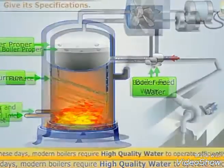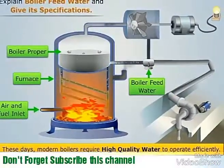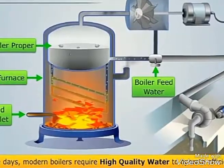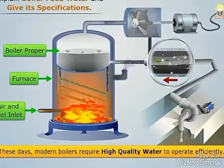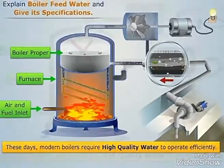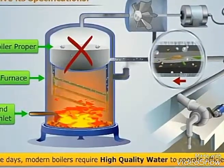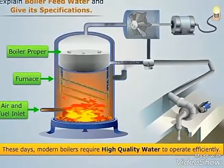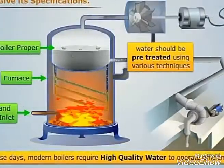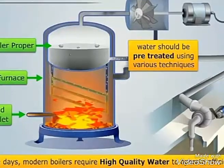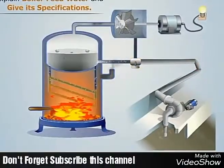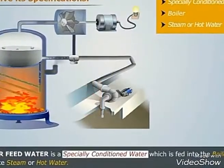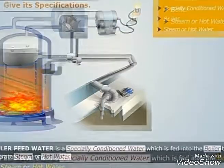The water which is fed into the boiler is called the boiler feed water. These days, modern boilers require high quality water to operate efficiently. But such water can never be obtained from any of the natural sources as it contains certain impurities. The presence of impurities in the water makes it unfit for use in the boilers, so to make the water fit for use in boilers, it should be pre-treated using various techniques.